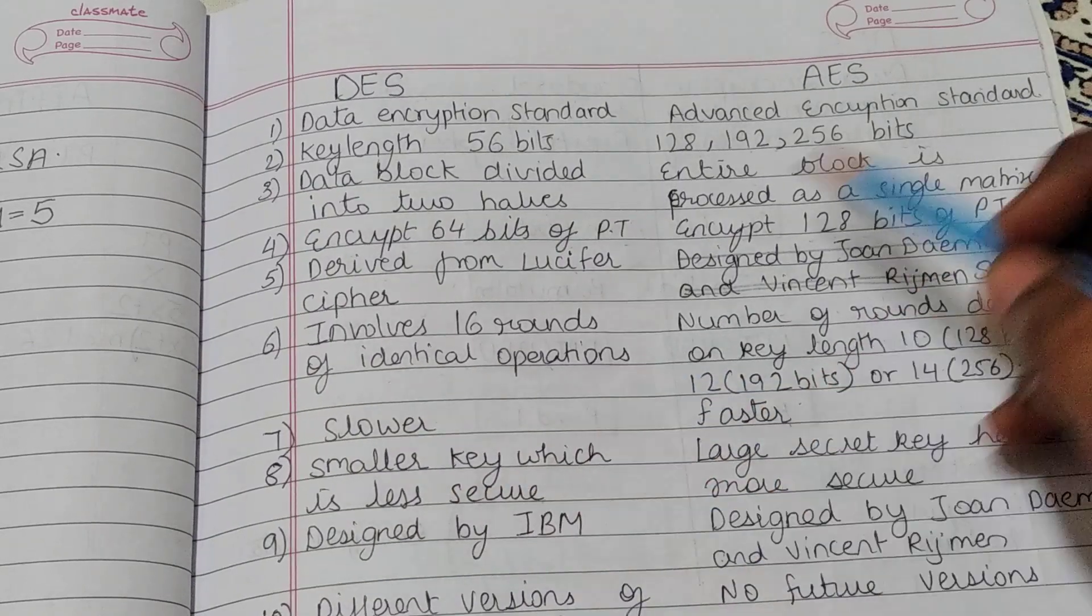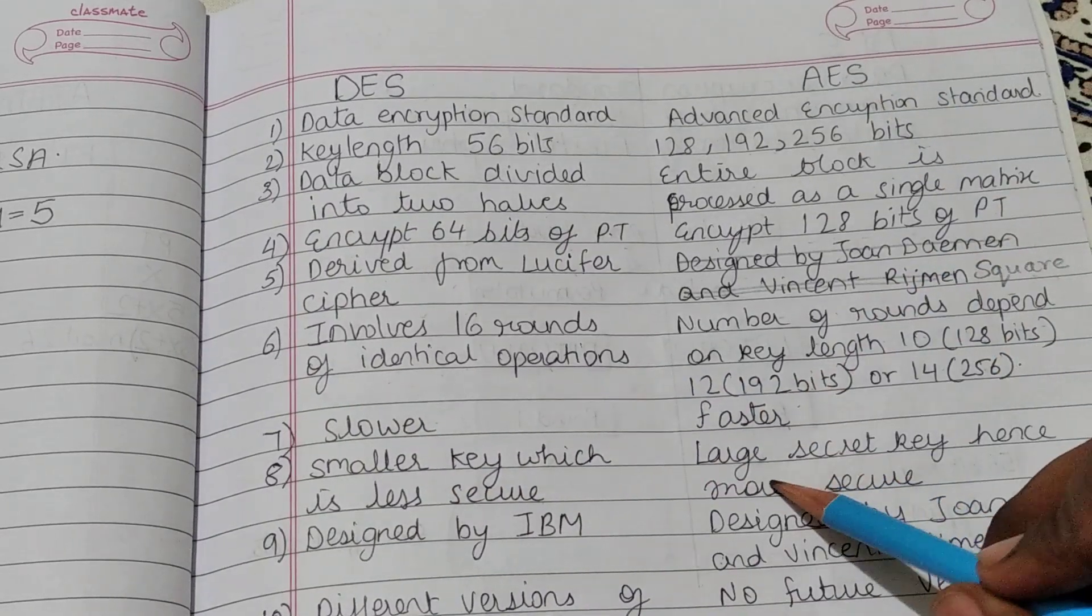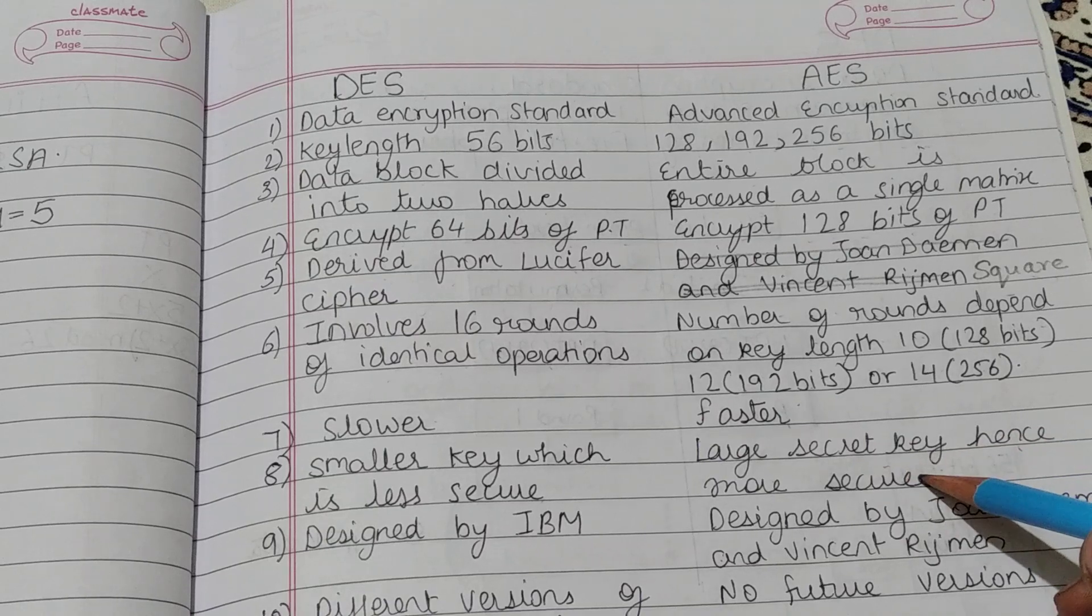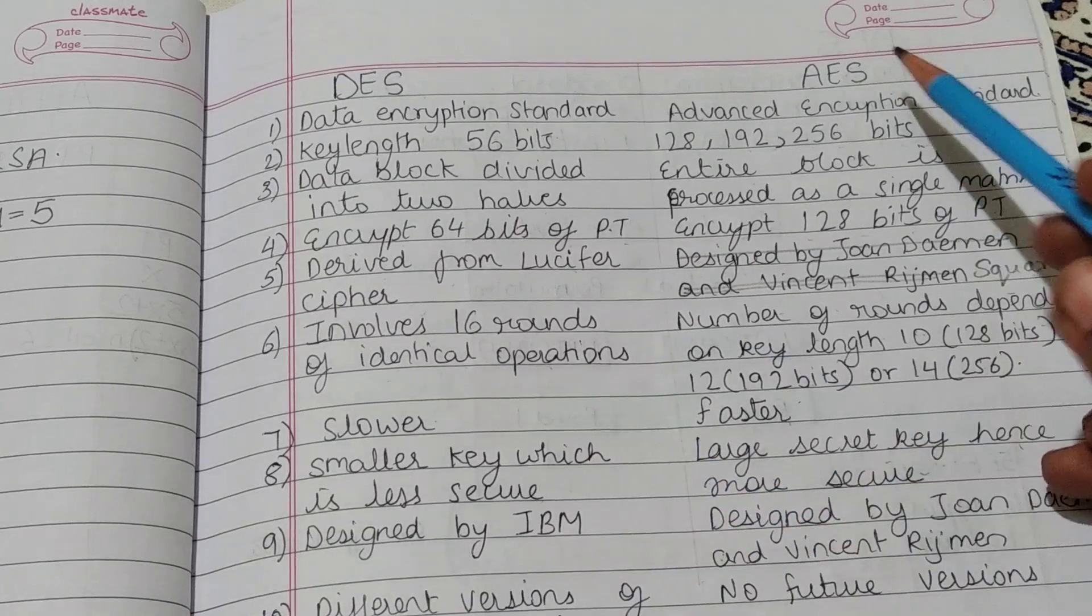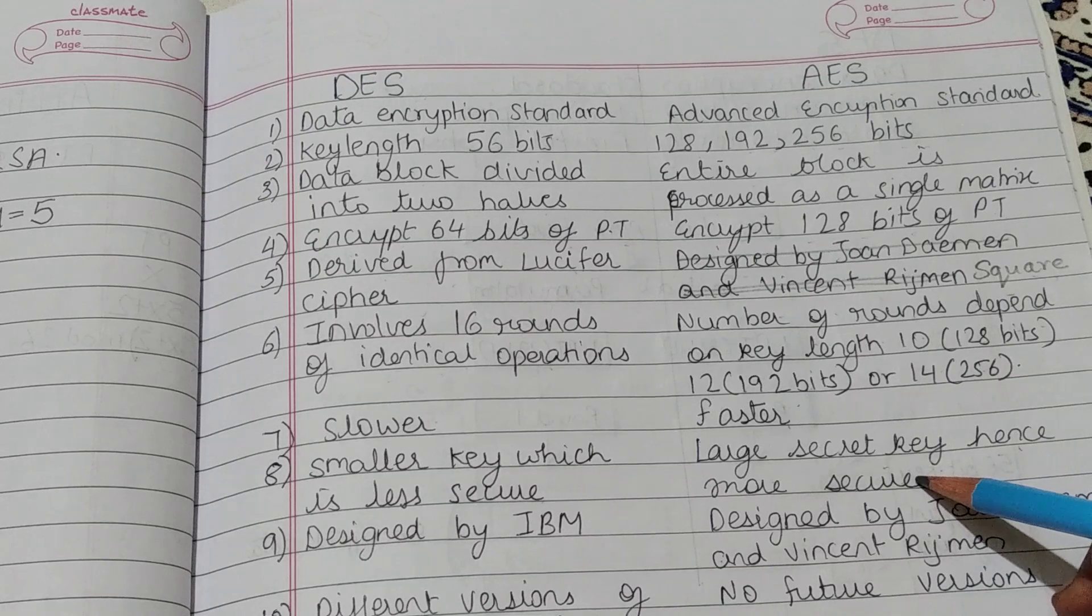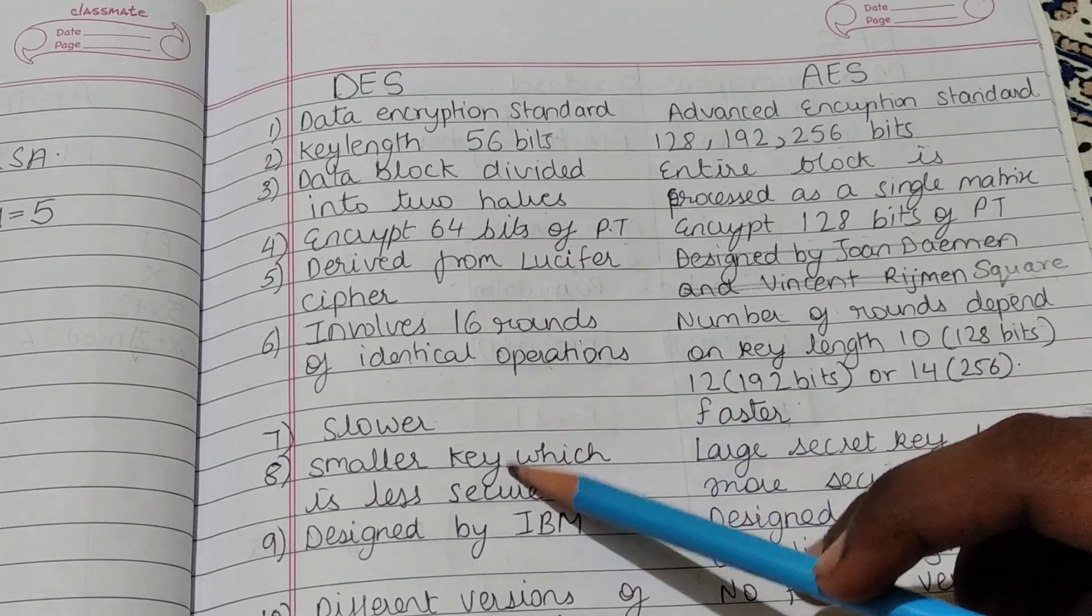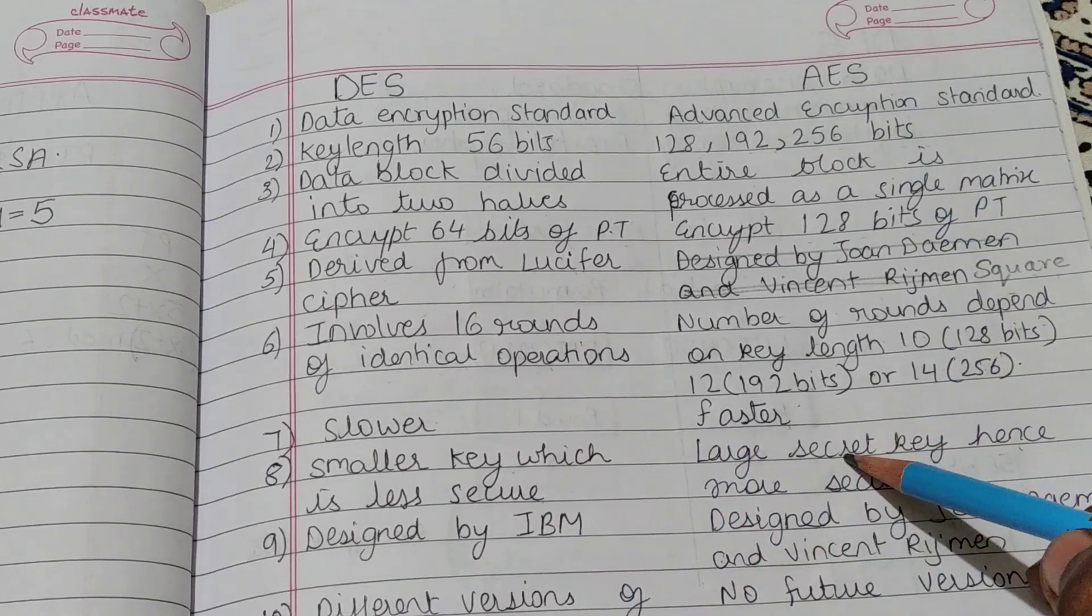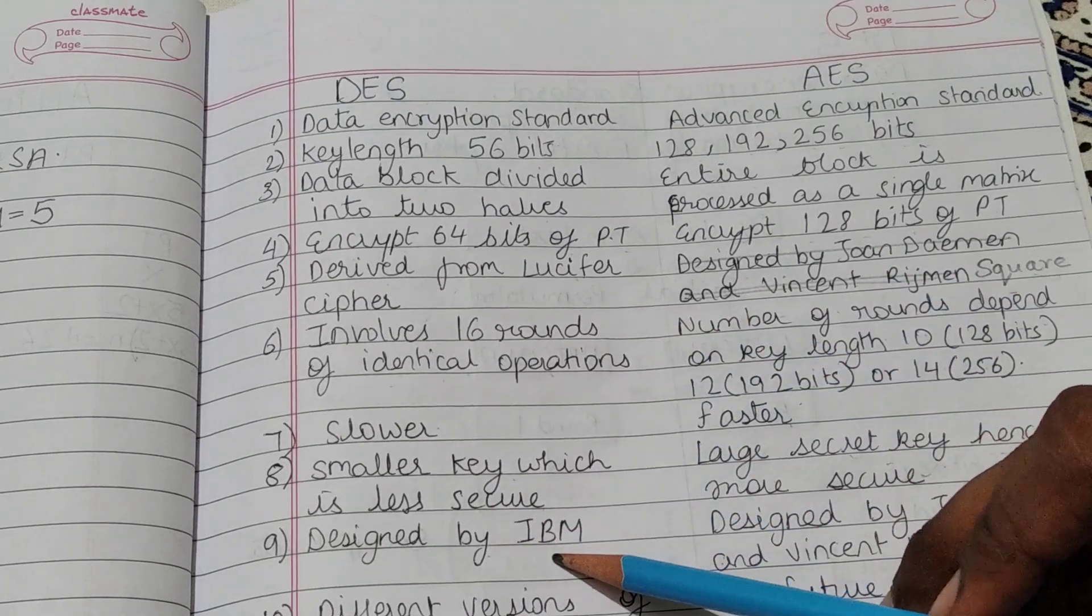AES has large secret key, hence more secure. So DES is less secure and AES is more secure due to the larger key size.